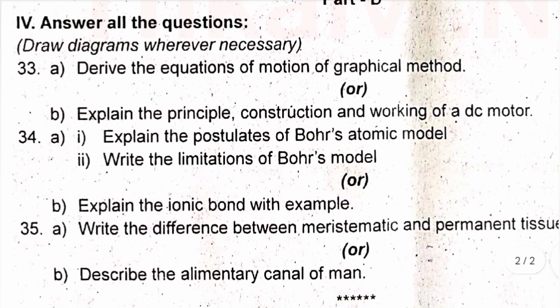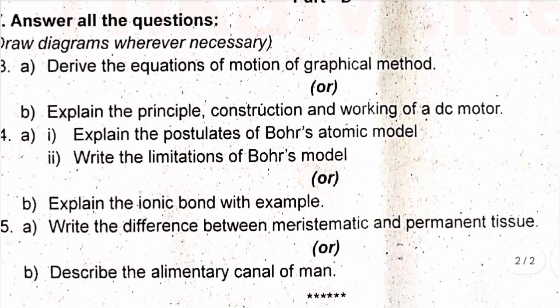Question 35: A) Write the differences between meristematic and permanent tissue. Or, B) Describe the alimentary canal of man. Choose either A or B to answer.